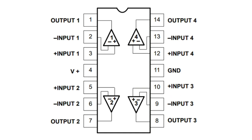We're going to see an overview of IC or integrated circuit pin configuration. This IC contains four amplifiers.